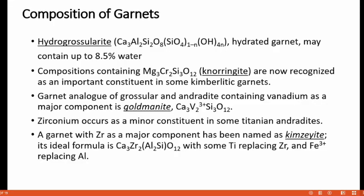Other rare occurrences of garnet include a hydrated variety known as hydrogrossularite, with a composition of Ca3Al2Si2O8(OH)8, in which part of the SiO4 tetrahedra is replaced by hydroxyl groups, containing up to 8.5% water. Compositions containing Mg3Cr2Si3O12 — where chromium occurs in the octahedral position — are termed knorringite, recognized as an important constituent in some kimberlitic garnets.